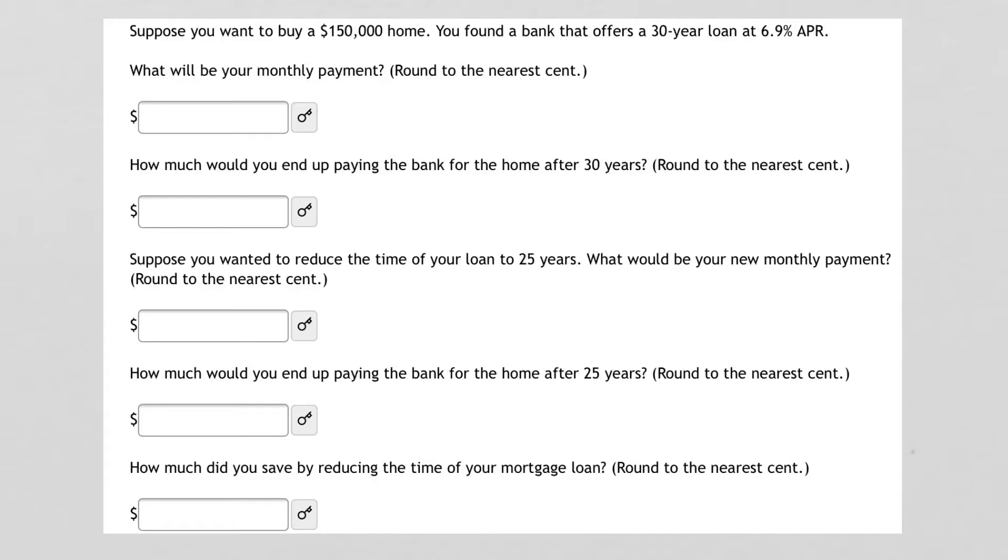Wow, there's a lot in this problem. So, let's get started. The first thing is, we want to know what our monthly payment is going to be on a 30-year loan at 6.9% APR. We want to pull out our formula sheet and copy down the formula that gives us a monthly payment based on a loan amount. That is, D equals P sub 0 times R over K divided by the quantity 1 minus quantity 1 plus R over K to the minus NK.